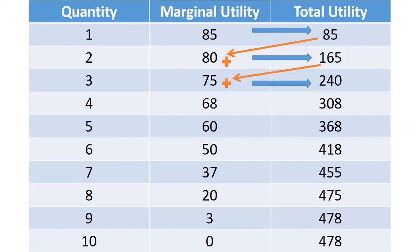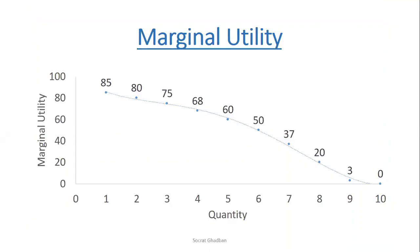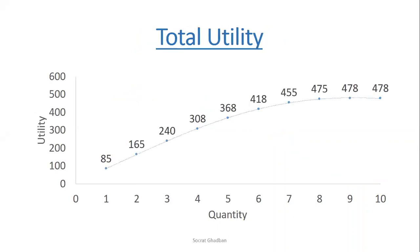As you can see, the marginal utility — the additional satisfaction — is decreasing with additional consumption. We can see it here graphically: whenever the quantity consumed is increasing, the marginal utility is decreasing. This is what we call the law of diminishing marginal utility. And here we're having the total utility — whenever I'm consuming more, my total utility is increasing, until we arrive at a certain point where we don't gain any additional satisfaction and the total utility becomes stable.